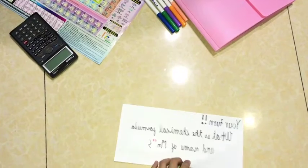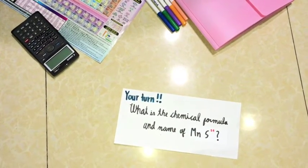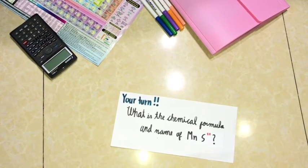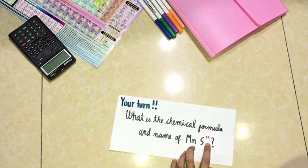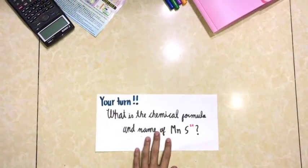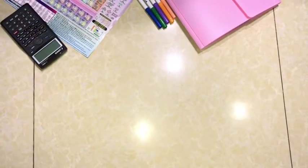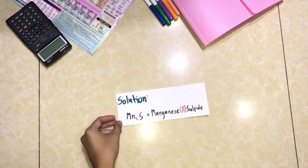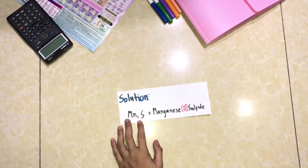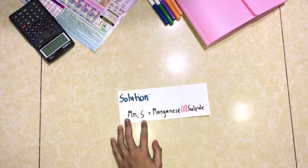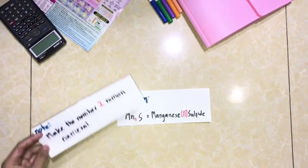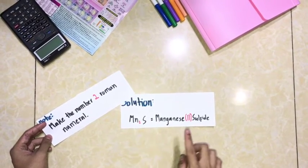Now it's your turn. What is the chemical formula and name of Mn and S with a superscript of 2? The solution is: MnS2 is equal to manganese(II) sulfide. Take note: make the number 2 a Roman numeral.